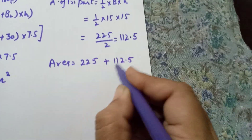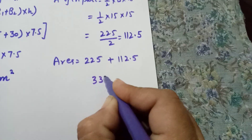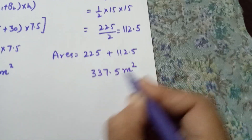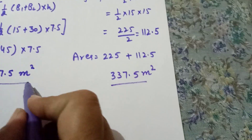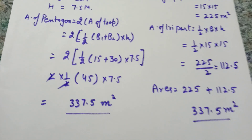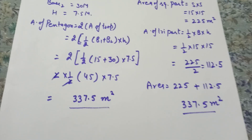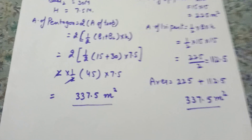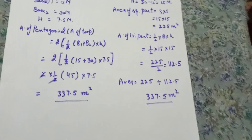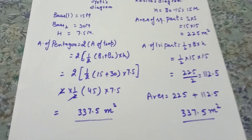Total area equals area of square part plus area of triangle part: 225 plus 112.5 equals 337.5 square meters. The result is the same by both methods. You also have to find out if there is any other method to calculate this area. This completes up to question number 10 of this exercise. Thank you and have a nice day.